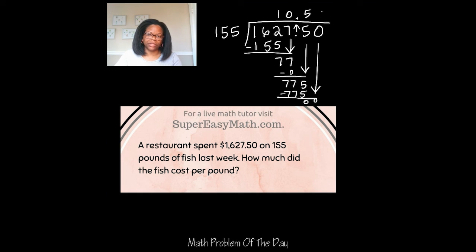And we just have a 0 to bring down, so that means we're going to have a 0 right here. So to answer the question, how much did the fish cost per pound? The fish cost $10.50 per pound.